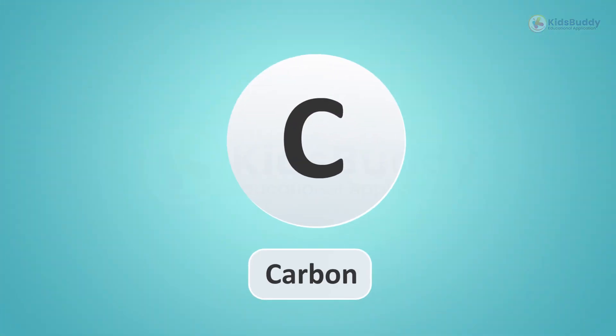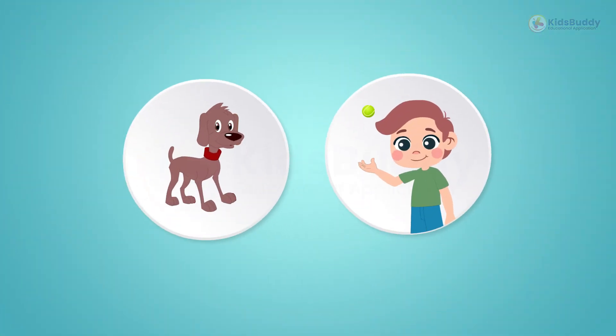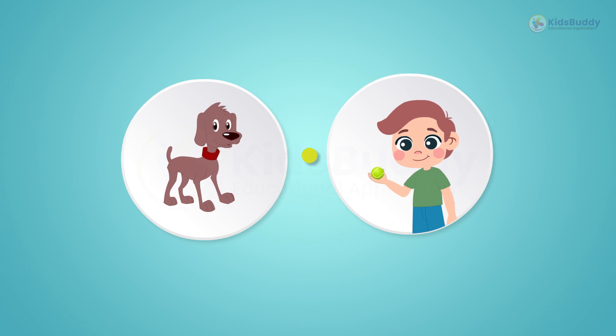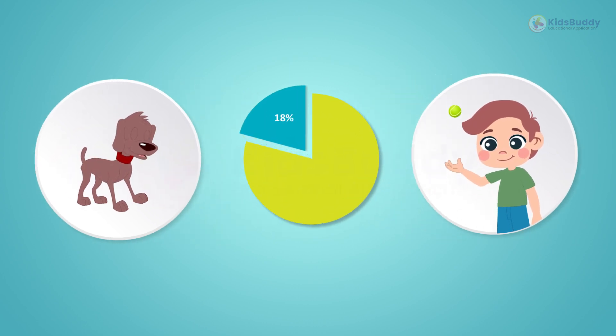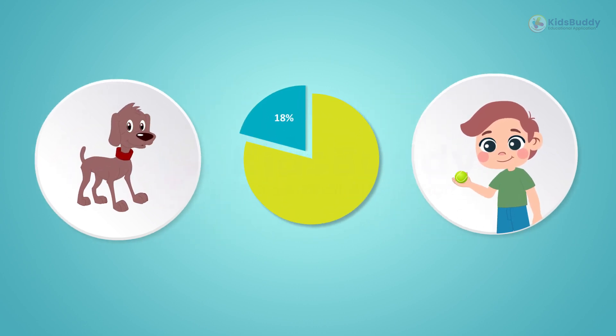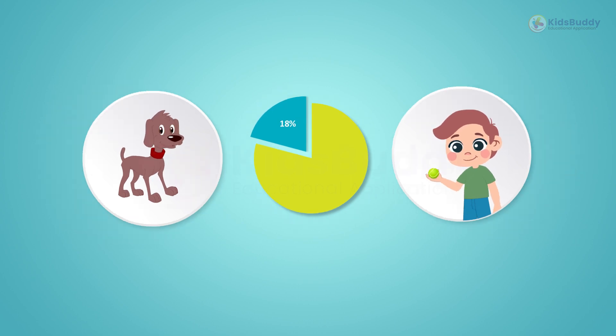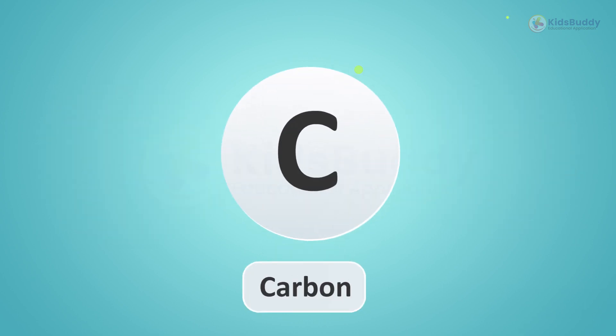Carbon is one of the most important chemical elements. Carbon compounds make up approximately 18% of all the matter in living things. It provides most of the energy used by humans to survive. Its symbol is C.